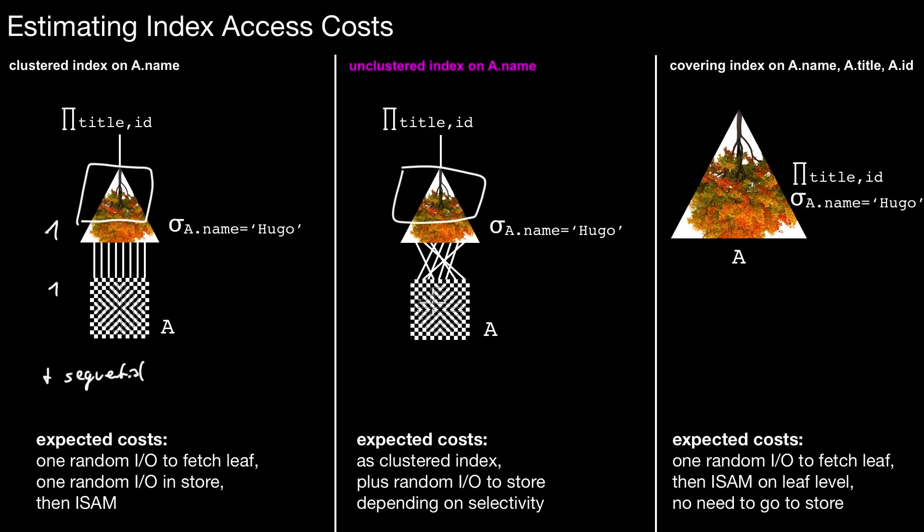This may be super expensive and this may totally ruin performance of a database system. Therefore, you should be very careful when using unclustered indexes, especially in a disk-based system, because they may lead to problems. Well, the third option was the cost for the covering index. Here, we gain basically that we do not have to access the store. So it's basically one random IO to fetch the leaf. Assuming that all of that, again, sits in my memory. And then it's ISAM on the leaf level. No need to go to the store. So it's basically one random IO only. One random IO better than the clustered index even. And then you do a sequential access. This is the best option here in this case, if this index exists.